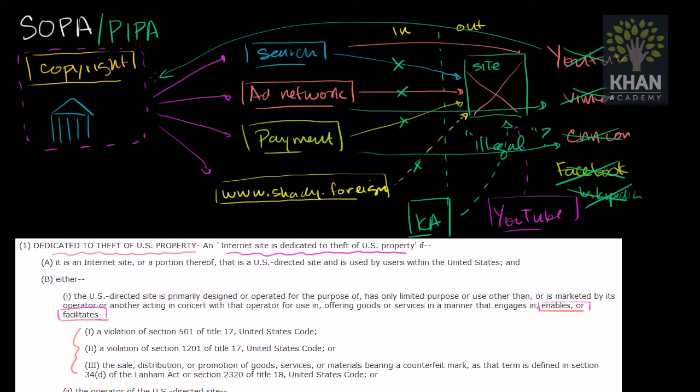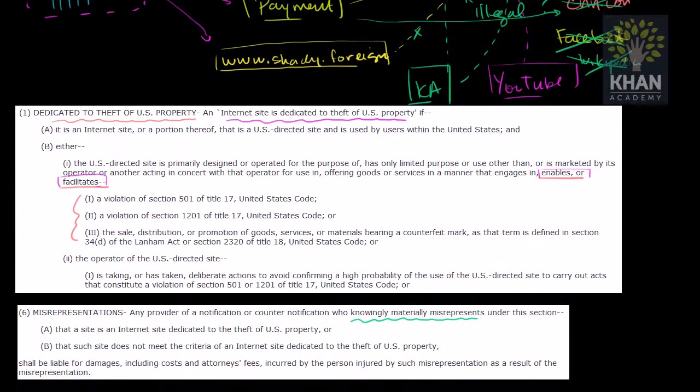And it gets even creepier than that, because to be considered this, you don't even just have to enable or facilitate, which is almost anything. One could argue even a computer is enabling or facilitating this on some level. But you are considered to be a site dedicated to theft of US property, even if you do nothing illegal, even if you don't even enable anything illegal, but if you just take actions that make it difficult for authorities to confirm that you're doing something illegal. So if you view this in the physical world, obviously some people are doing illegal things in their homes, and obviously a lot of people lock their doors to keep people out of their homes. And maybe people doing illegal things are even more likely to lock their doors and close their shutters. What this would do, and this would do it in the virtual sense, is say, look, just by taking the deliberate action of closing your shutters and locking your doors, which makes it hard for federal agents to confirm that you're doing illegal things, just by doing that, that itself is an illegal act.